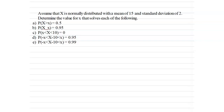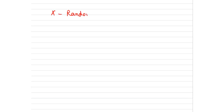Here we are going to solve this problem. Assume that x is normally distributed with mean equal to 15 and standard deviation equal to 2. From the given relationship we have to find the value of x. In this question x is the random variable, approximated to mean 15 and standard deviation sigma equal to 2.